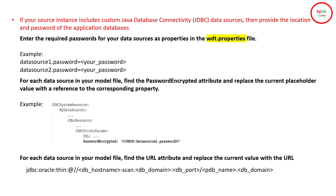Create a properties file — for example, wdt.properties — and define parameters for each data source password. For instance: datasource1.password=<password> and datasource2.password=<password>. In the YAML file, inside the password-encrypted attribute, reference these using the format @@PROP:datasource1.password. In the URL attribute, define the complete JDBC URL of your data source. This is how you define data source values in the YAML file alongside the custom wdt.properties file.